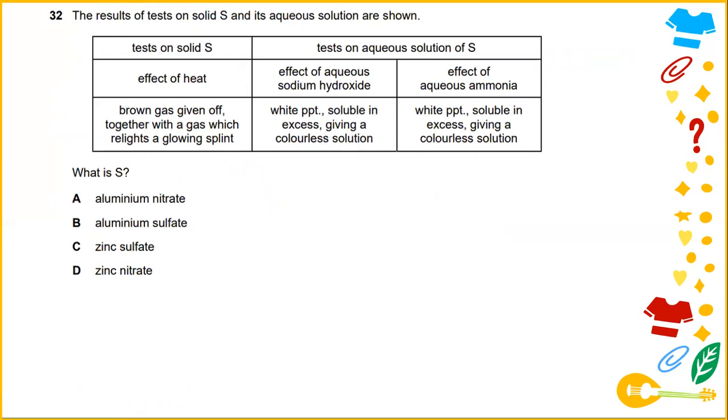Results of tests on solid S and aqueous solutions are shown. Tests on solid S, the effect of heat, it turned a brown gas given off together with a gas which relights a glowing splint. Tests on aqueous solution of S, effect of aqueous sodium hydroxide, soluble in excess giving a colorless solution. Effect of aqueous ammonia is also soluble in excess giving a colorless solution. The answer would be D.